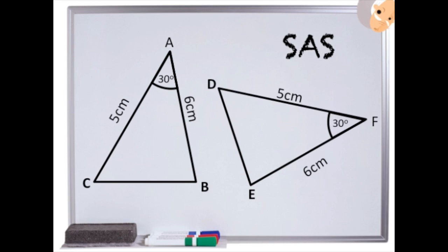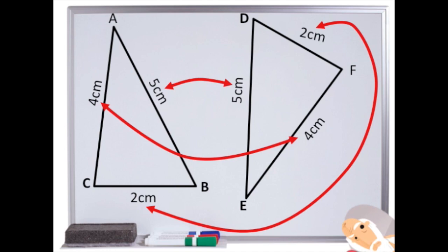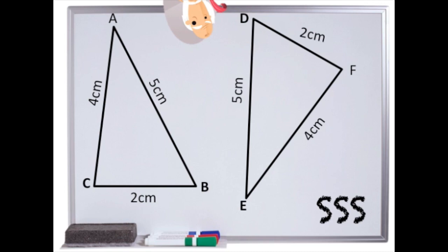Let's check out the second way to prove congruence. We know two triangles are the same if they have all three sides the same. This is called side side side or SSS.